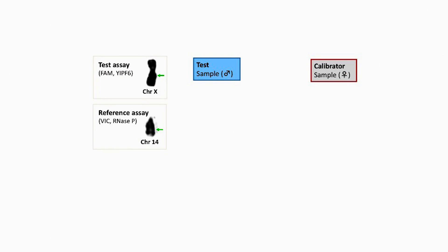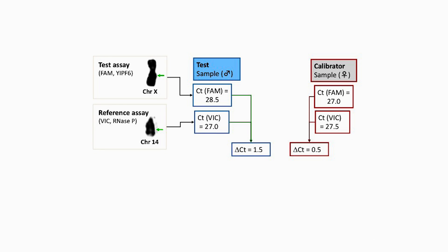Let's look at an example in which the target gene is on the X chromosome. In a male sample, we should find a copy number of one for that target. A baseline subtracted cycle threshold, or DCT, is determined between the two assays. In our example, the unknown sample has a DCT of 1.5 and the calibrator a DCT of 0.5.